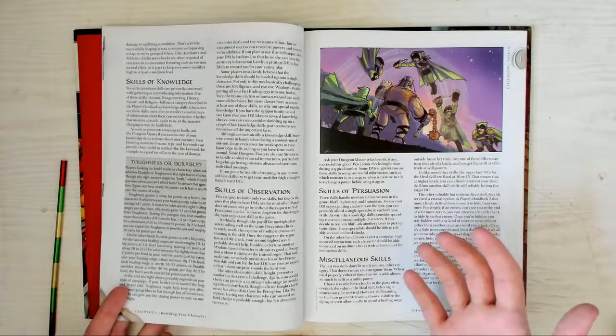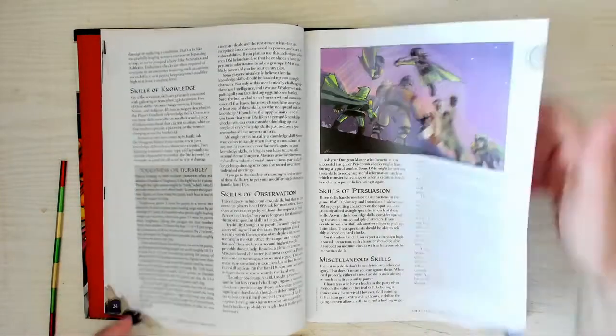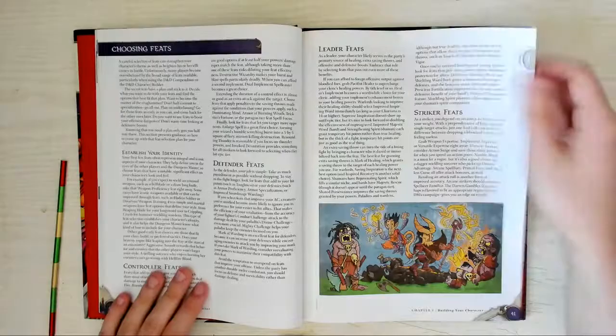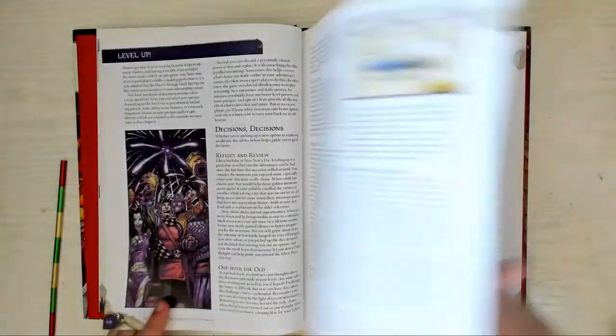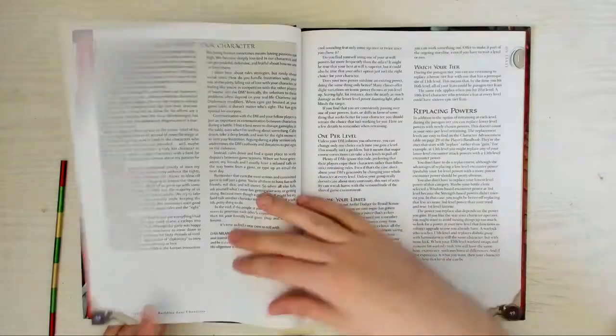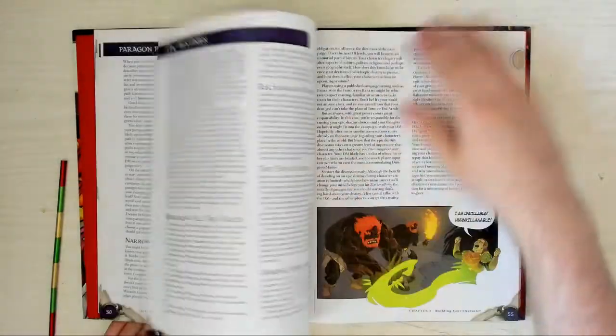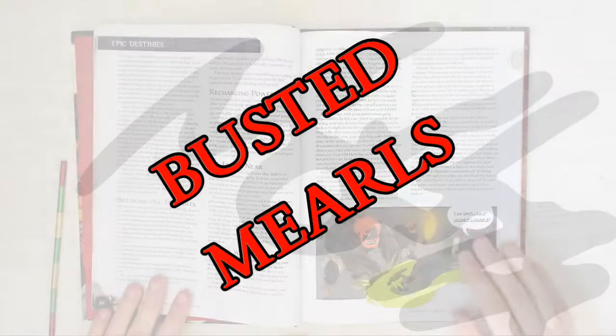Feats, levelling up, paragon paths, epic destinies. Behold, I am a god, and I have the mechanics to prove it. Pretty unique take for high-level play, but did anyone ever get that far? Did anyone else notice that the racial feats from Xanathar's Guide are just the racial feats and encounter powers from 4th? Ha! Busted Merls!